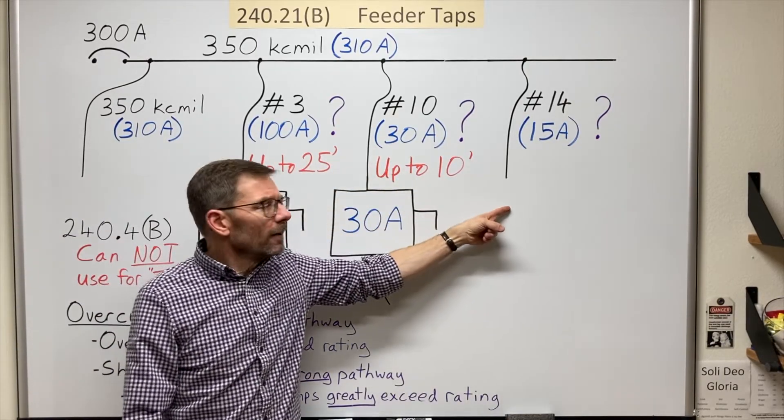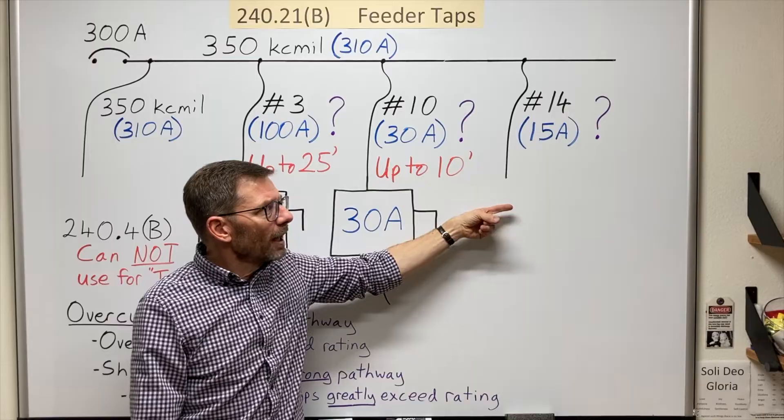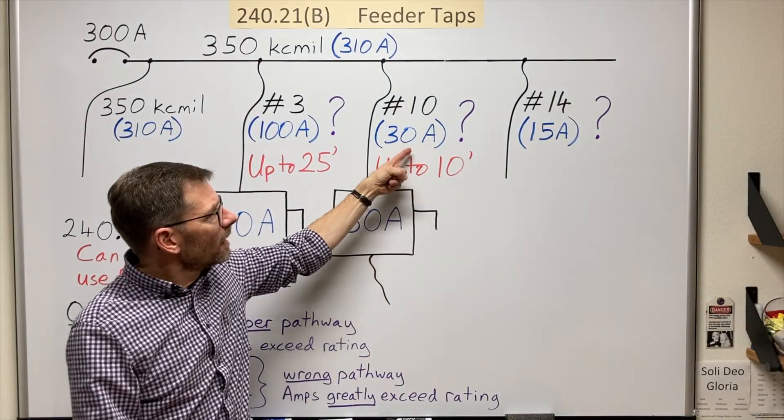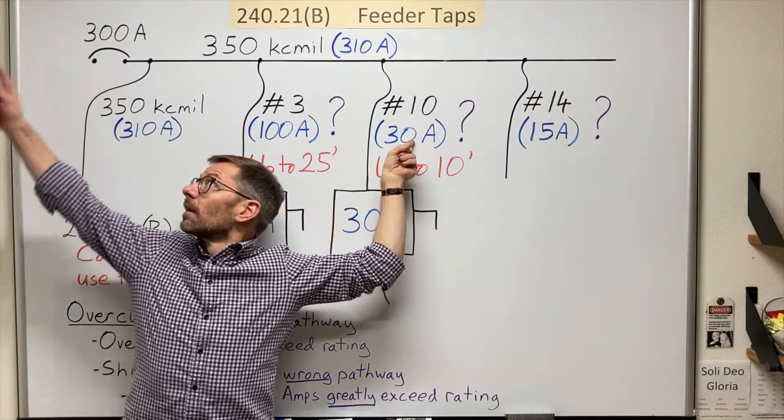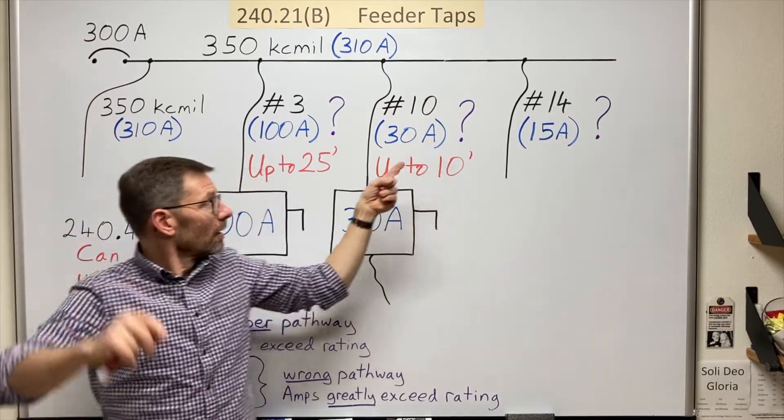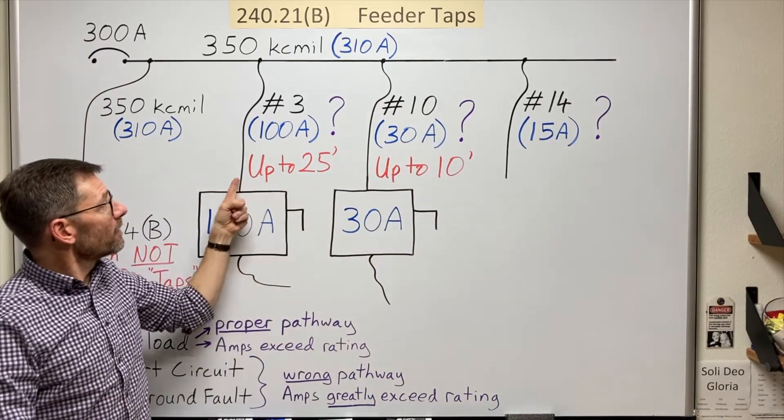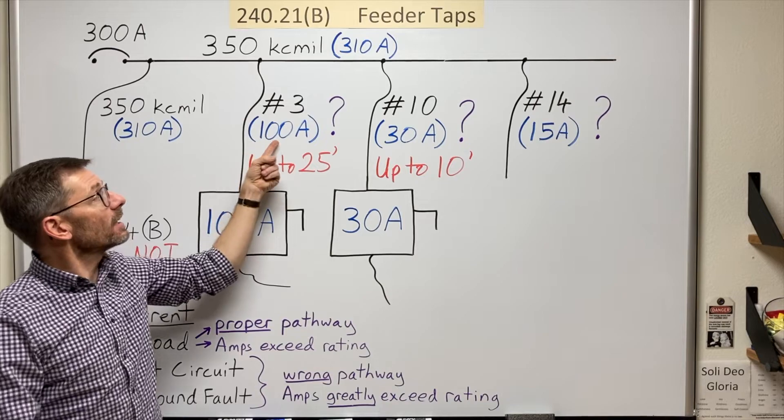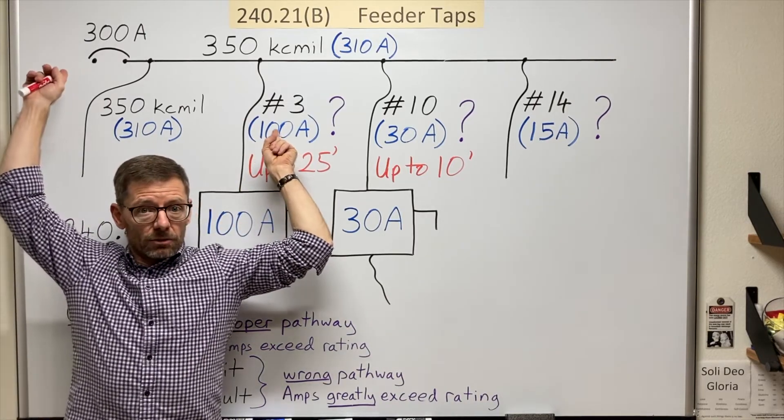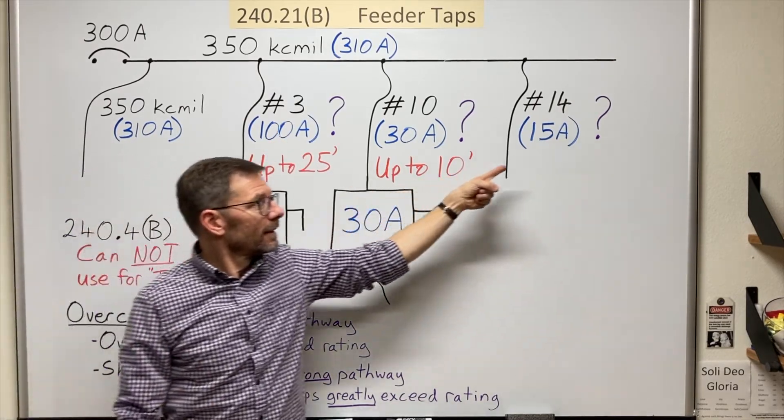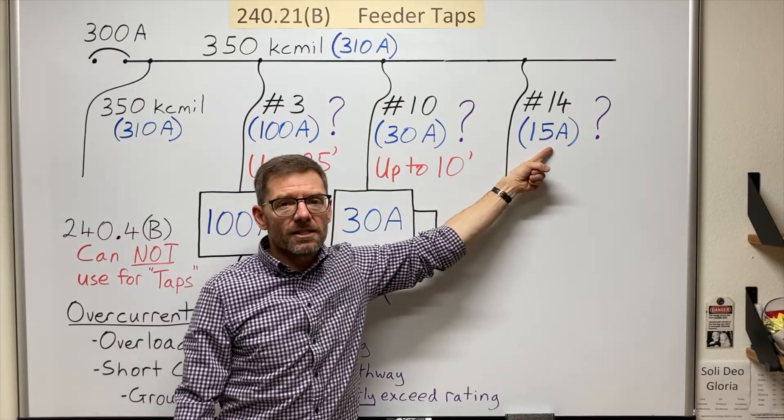Over here now. Why did I leave that blank? I can go up to ten feet if this is at least one tenth of this amount. I can go up to twenty-five feet if this conductor's ampacity is at least one third of this amount. But I have nothing for less than a tenth.